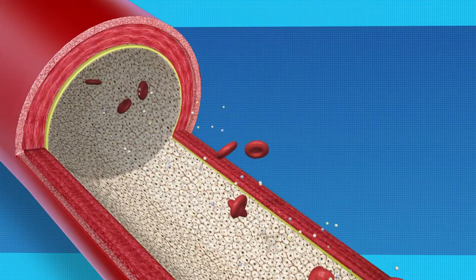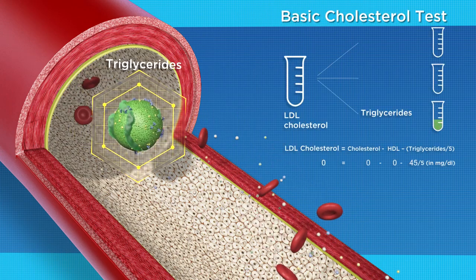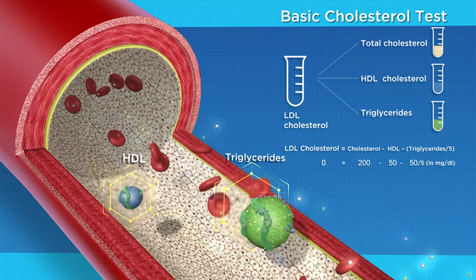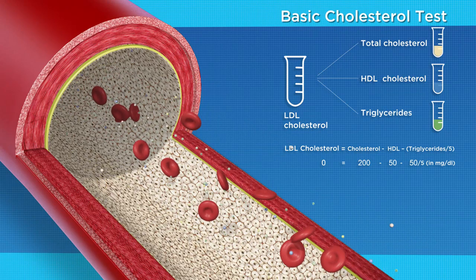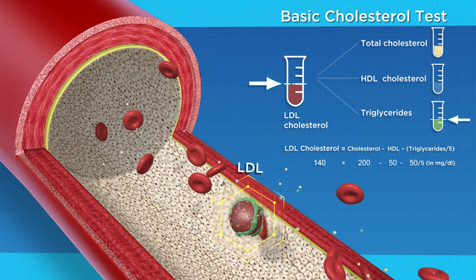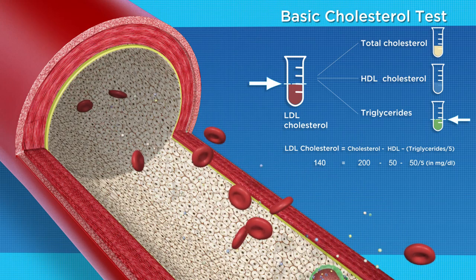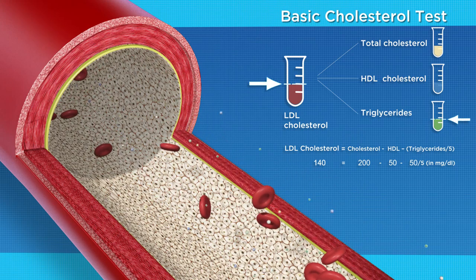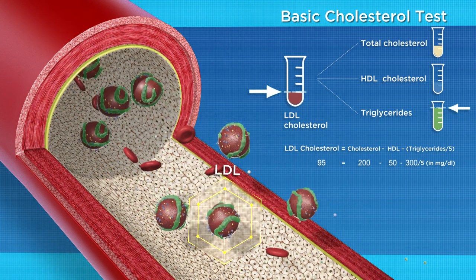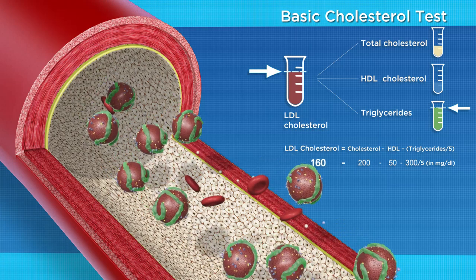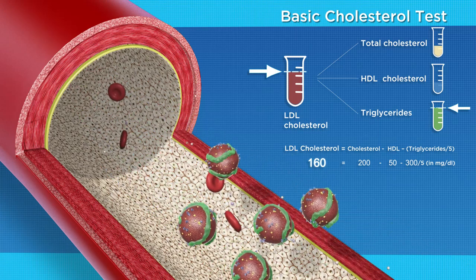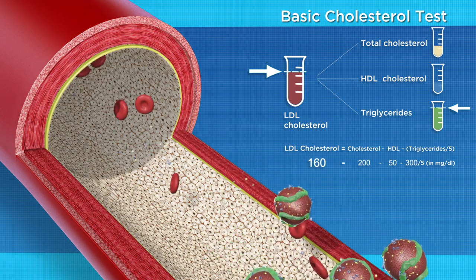The basic lipid panel is designed to measure triglycerides, HDL, and cholesterol. With those measures, it then estimates the LDL. Unfortunately, that LDL estimate can vary widely. So you may think your LDL looks like this, when in actuality, it looks like this. We can all agree that trusting an estimate for cardiovascular disease risk assessment just isn't enough.